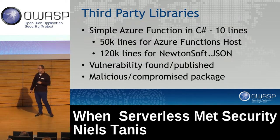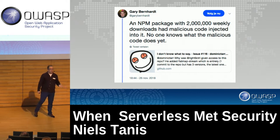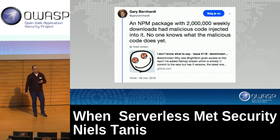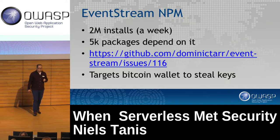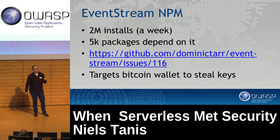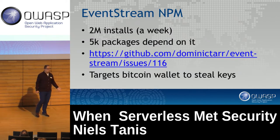It's not unseen that published packages are malicious or compromised — we saw that earlier this week. This is related to the NPM incident that happened: a stale library, nobody was developing it, somebody got involved saying 'I want to help out' and published a version with code that targeted Bitcoin wallets to steal keys. It had 2 million installs per week and 5,000 packages depending on that single library. As an organization, curate third-party libraries, be aware of what vulnerabilities are used by a function, and make sure you can act when something happens.